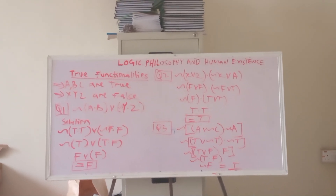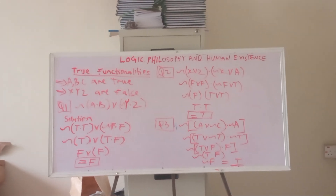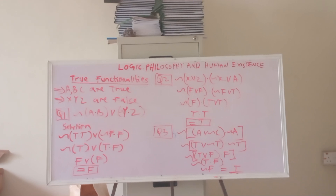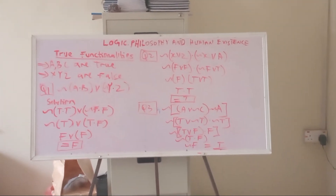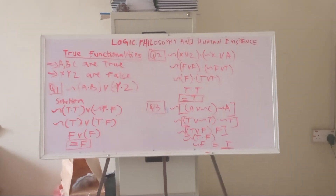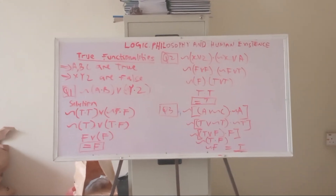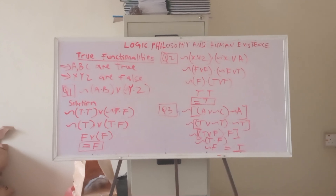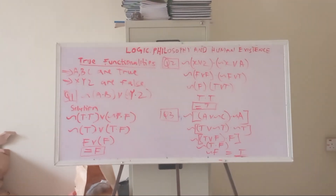Remember, the law of BODMAS — the inner bracket comes first before the outer bracket. T ∨ F is true. Then T ∧ F is false. The outer coil (negation) is still waiting; you cannot apply it until the bracket is solved. The negation of false gives true, so the final answer for the third equation is true.